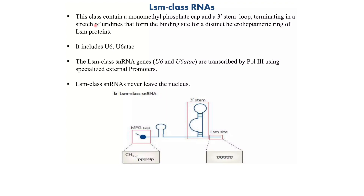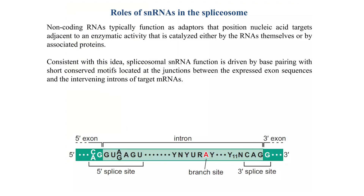The other class is Lsm class RNAs, which contain only a monomethyl phosphate cap at the 5' end and a 3' stem loop terminating in a stretch of uridine bases that form the binding site for a distinct heteroheptameric ring of Lsm proteins, including U6 and U6atac proteins. Lsm class snRNA genes are transcribed by RNA Pol III using specialized external promoters. Unlike Sm class RNAs, Lsm class snRNAs never leave the nucleus.